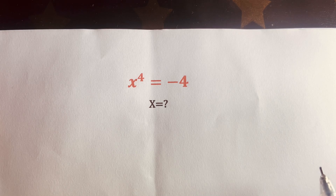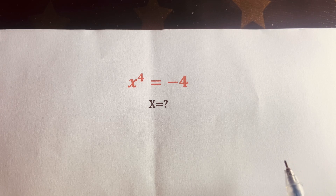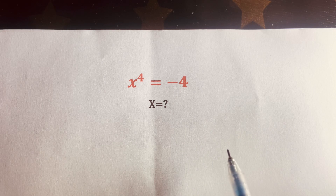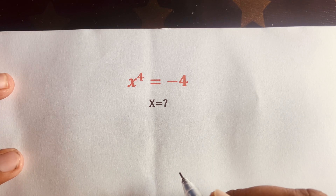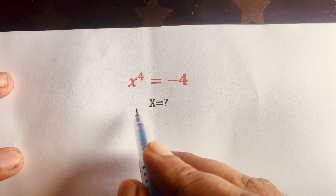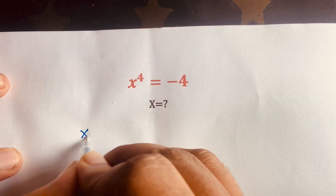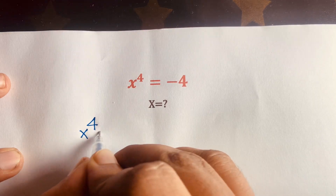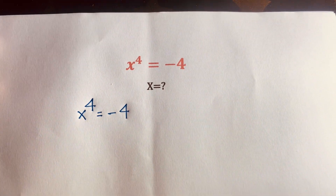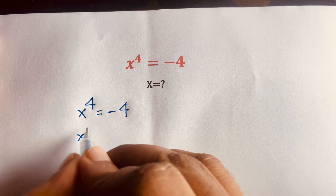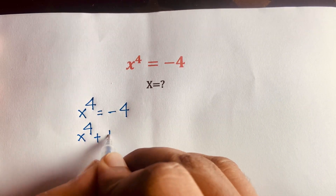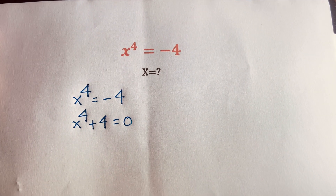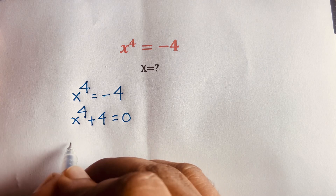Hello everyone. In this video we have solved an interesting math question: x to the power 4 is equal to minus 4. What is x? First of all, this equation becomes x⁴ = -4, and moving -4 to the other side gives x⁴ + 4 = 0.